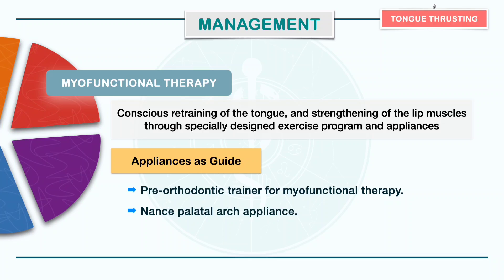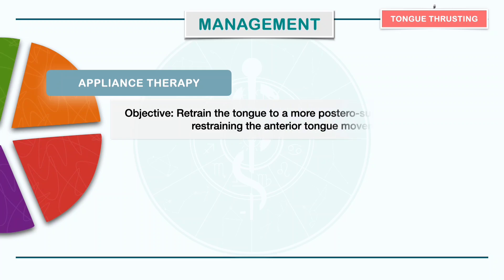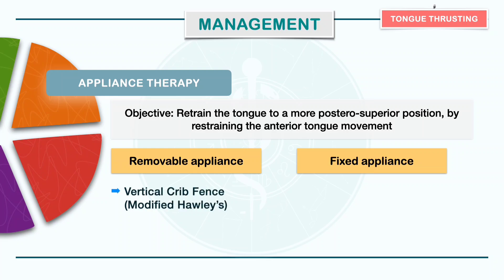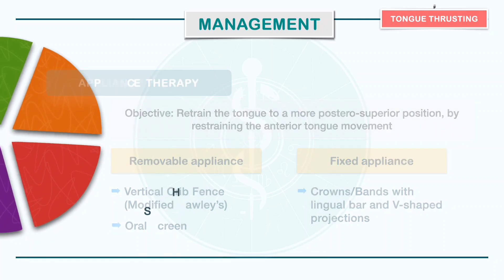In appliance therapy, the objective is to retrain the tongue to a more posterior superior position by restraining anterior tuck movement. This can be achieved by both removable and fixed appliances. Removable appliances include vertical crib, fans and oral screen, while in habit breaking appliances, crowns and bands are given on first permanent molars. They are connected with 0.4 inch SS U-shaped lingual bar and 3 to 4 V-shaped projections are soldered to the anterior part of the bar.